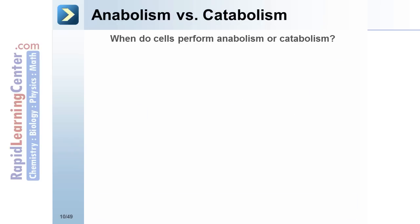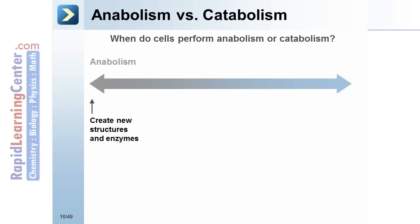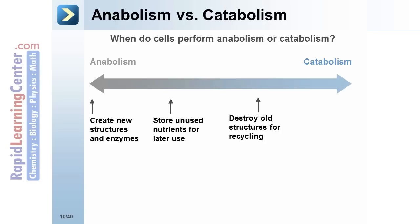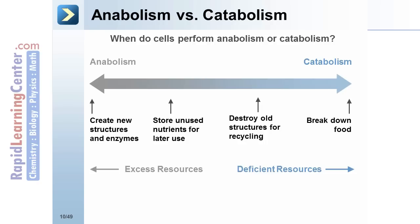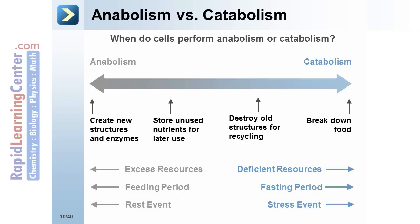Anabolism versus catabolism. When do cells perform anabolism or catabolism? Anabolism is used to create new structures and enzymes, and to store unused nutrients for later use. Catabolism is used to destroy old structures for recycling and to break down food products. Excess resources result in anabolism; deficient resources involve catabolism. During a feeding period: anabolism. During a fasting period: catabolism. A resting event involves anabolism; a stress event involves catabolism.